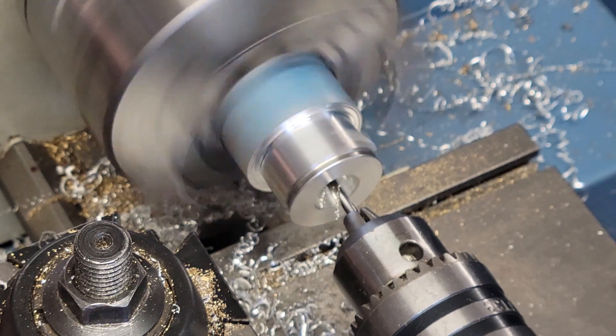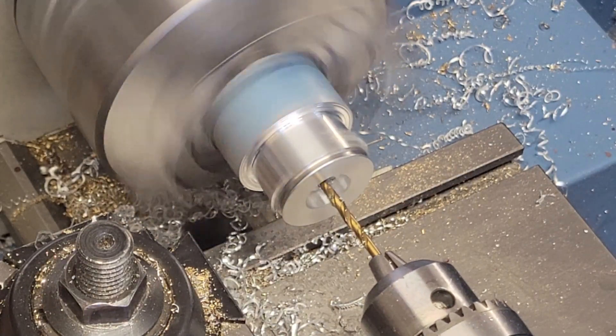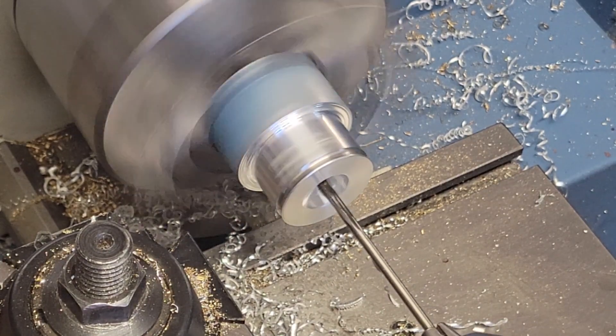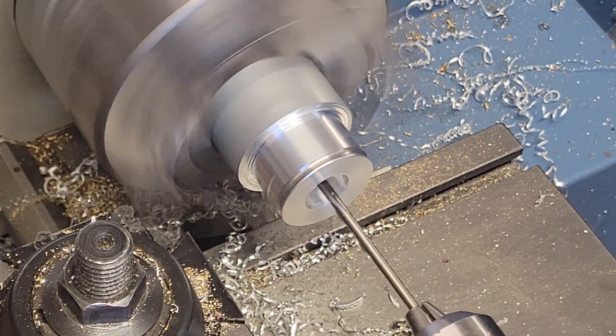To create the center hole for the water pump pulley, we use the same technique we've been using all along. We'll center drill, drill undersize, and then ream for the eighth inch dowel pin being used for our shaft.